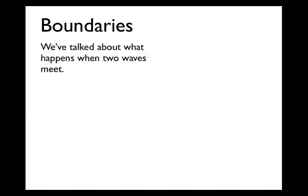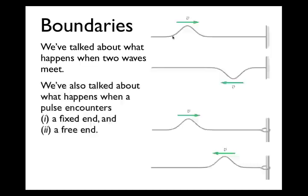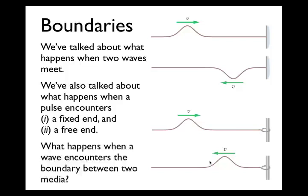As we wrap up, a few words about boundaries. When two waves meet, superposition causes them to add or cancel. When a pulse encounters a fixed end — where the string is attached to a wall — the reflected pulse is sent back inverted, switching sides of equilibrium. If a spring has a free end connected to a ring that slides on a rod, the reflected pulse gets an even larger amplitude momentarily and returns on the same side of equilibrium as the incoming pulse. What happens when a wave encounters the boundary between two different media?